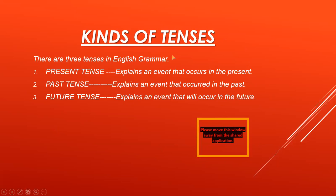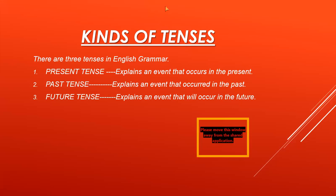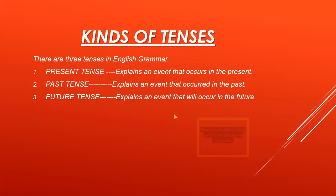Now I am moving to kinds of tenses. You all know very well that we have three kinds of tenses in English grammar: present tense, past tense, and future tense. Present tense explains an event that occurs in the present — whatever is going on now. Past tense explains an event that occurred in the past, meaning actions that had been completed. Future tense explains an event that will occur in the future — actions that will be done in the future.